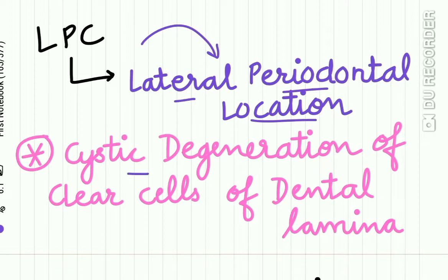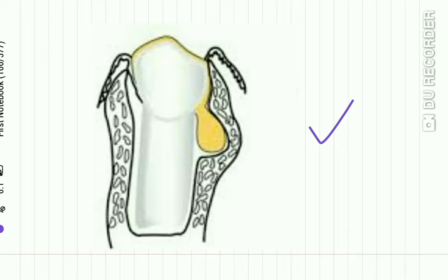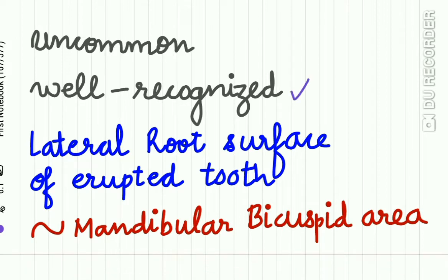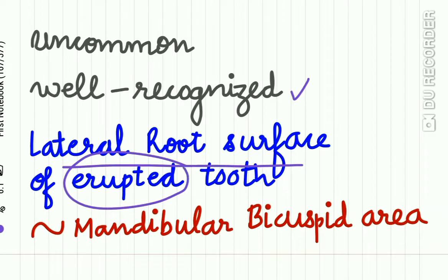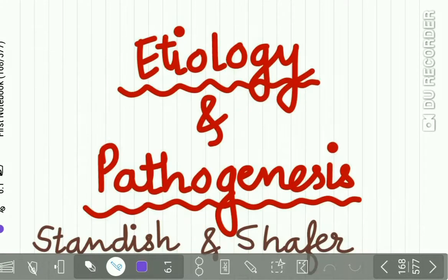There is cystic degeneration of the clear cells of the dental lamina. Here in this picture you can see the lateral periodontal cyst which has occurred on the lateral periodontal surface of the tooth. It is an uncommon but well-recognized lesion present on the lateral root surface of an erupted tooth. This cyst is more commonly found in the mandibular bicuspid or premolar region.